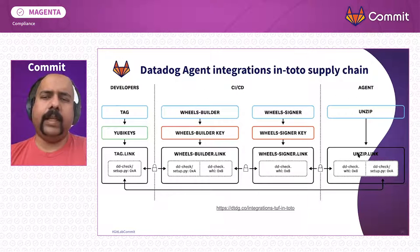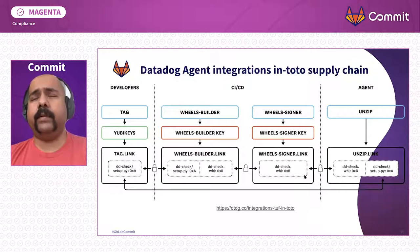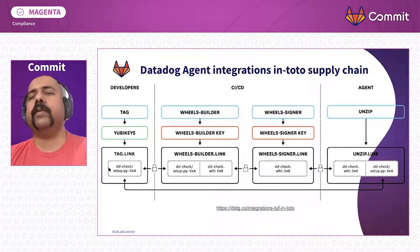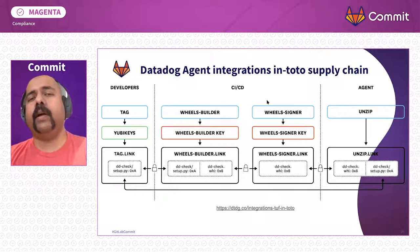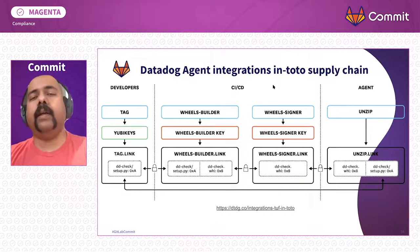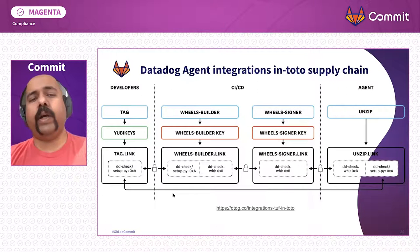What happens behind the scenes is we tell the agent: first make sure the wheel was produced by the wheel signer, then unzip it to make sure the source code was signed by our developers. So unless you get developer signatures — even if you break into our CI/CD — you won't be able to forge developer signatures. That's where we get the end-to-end security from.